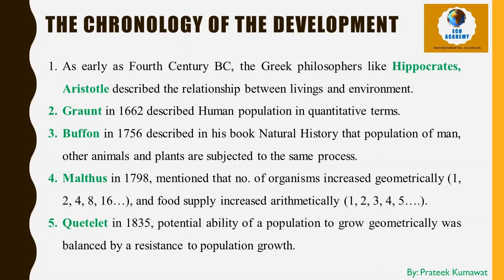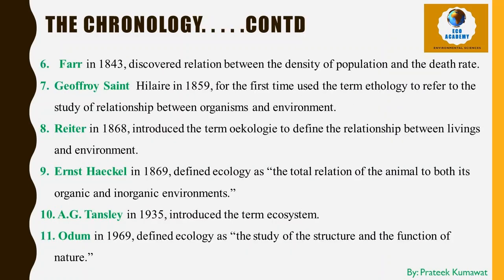Malthus in 1798 mentioned that the number of organisms increased geometrically while food supply increased arithmetically. Quetelet in 1835 suggested that the potential ability of a population to grow geometrically was balanced by a resistance to population growth. Farr in 1843 discovered a relation between the density of population and the death rate. Geoffrey St. Hilaire in 1859 gave the term 'Ethology' to refer to the study of the relationship between organisms and environment. Rater in 1868 introduced the term 'Ecology' to define this relationship.